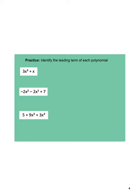Identifying the leading term: we see 3x to the third — that is our leading term because the other exponent is 1. On the second one, we see an x squared and then an x to the fifth, so our leading term is actually negative 2x to the fifth. You have to remember that was a minus 2x to the fifth, so that's part of the term. So negative 2x to the fifth would be the leading term.